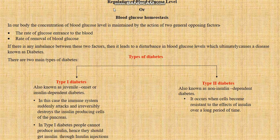In this lecture we will learn about regulation of blood glucose level, or blood glucose homeostasis. Homeostasis is a term used for metabolic equilibrium. In our body, the concentration of blood glucose level is maintained by the action of two general opposing factors: one, the rate of glucose entrance to the blood, and second, the rate of removal of blood glucose.